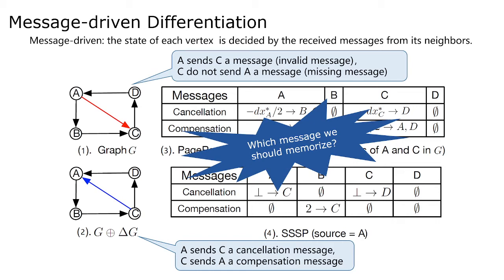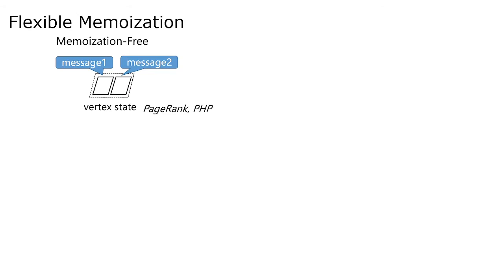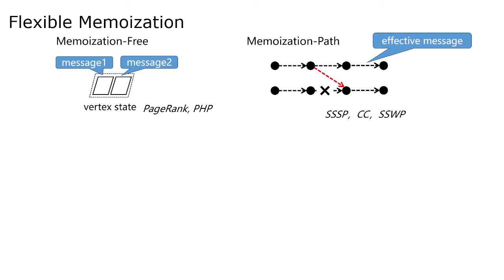The next question is which messages we should memorize. For some algorithms, the received messages can be deduced from the final state of the vertex. For these algorithms, it is unnecessary to record any messages to incrementalize batch algorithms, such as PageRank. We call this memorization policy memorization-free. In some vertex-centric algorithms, the final state of a vertex is determined by one of the received messages, referred to as effective messages, such as SSSP, CC, and SSWP. These effective messages form a set of paths between vertices. When the graph is updated, we can deduce the invalid and compensation messages using these paths of effective messages. This memorization policy is called memorization-path.